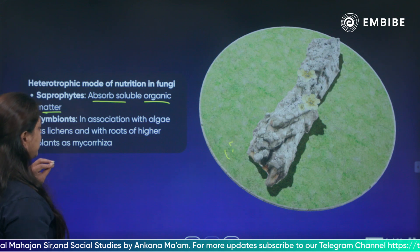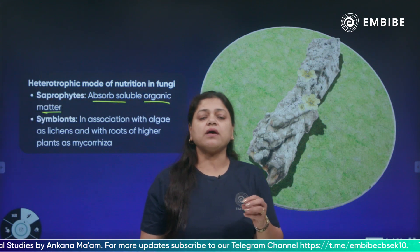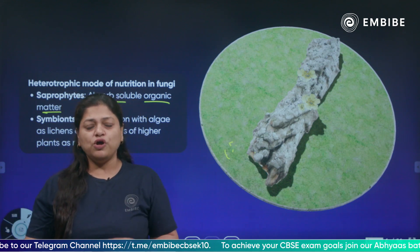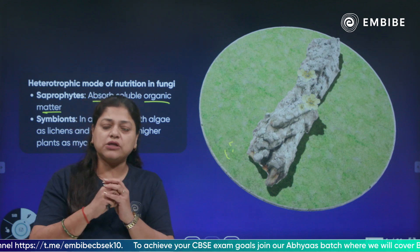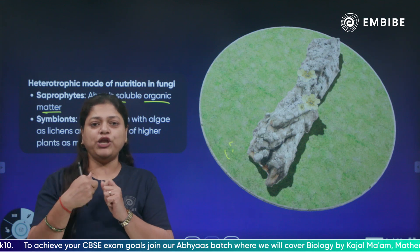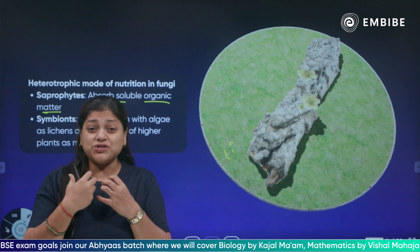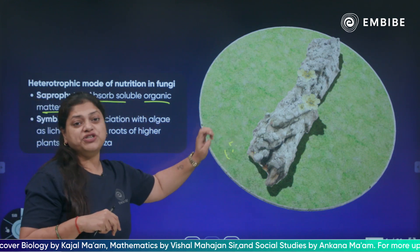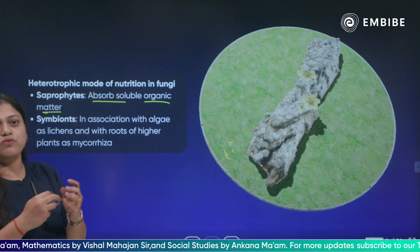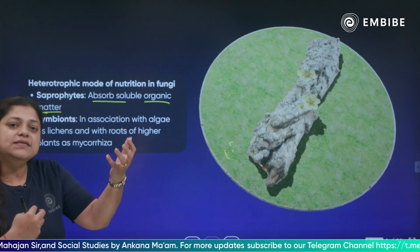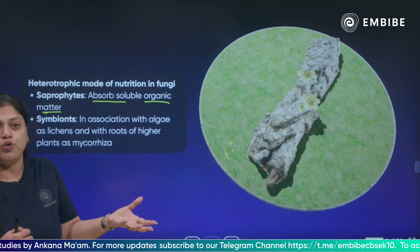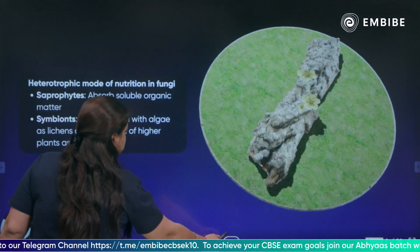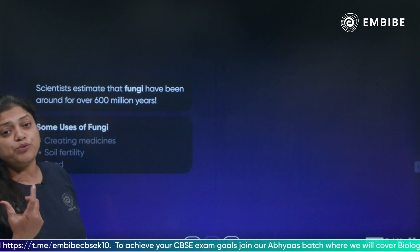There is also symbiosis in fungi. Sometimes fungi form associations with algae. Algae are green and can prepare their own food; the algal part provides food while the fungal part absorbs water and provides it to the green algae. This type of association is called symbiotic. But mainly, fungi obtain their food as saprotrophs by absorbing and digesting organic material.